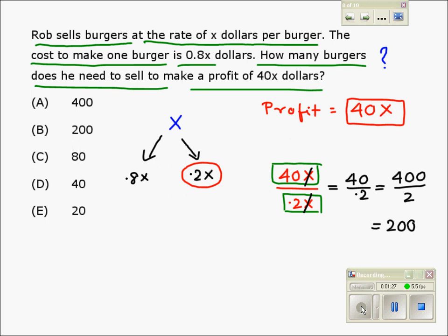So he needs to sell 200 burgers. Therefore, option B is the correct option.